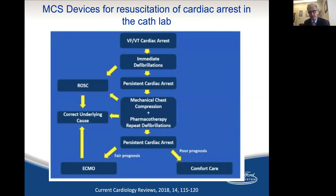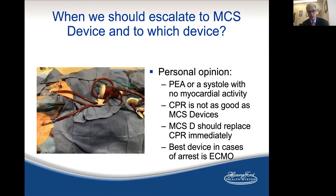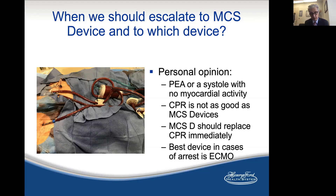Mechanical circulatory support devices for resuscitation of cardiac arrest in the cath lab should come early in your armamentarium. For VTAC: immediate defibrillation, then ROSC, correct the underlying cause. If resistant, do mechanical chest compression — manual or mechanical — with pharmacotherapy and persistent shocks. You have to upgrade to ECMO as soon as possible. My personal opinion: for pulseless electrical activity, asystole, or no myocardial activity by x-ray, CPR is not as good as mechanical circulatory support devices. Mechanical support should replace CPR immediately if you can. The best device in these cases is ECMO, because you can de-escalate — but when you think of escalation, it may be too late.